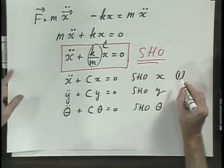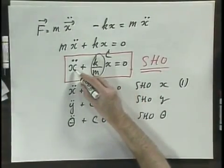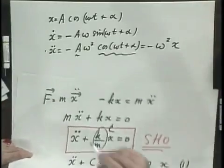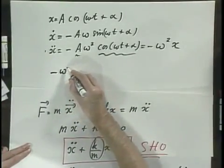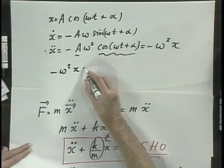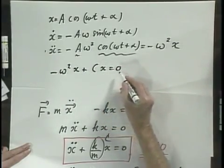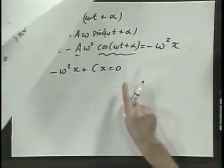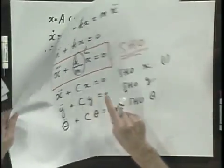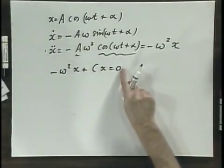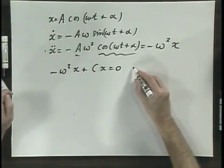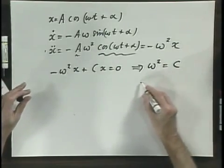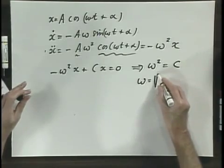I will substitute this result into the equation x double dot plus c times x equals zero. Substituting x double dot gives minus omega squared x plus c x equals zero. This is true if and only if omega squared equals c, so omega equals the square root of c.